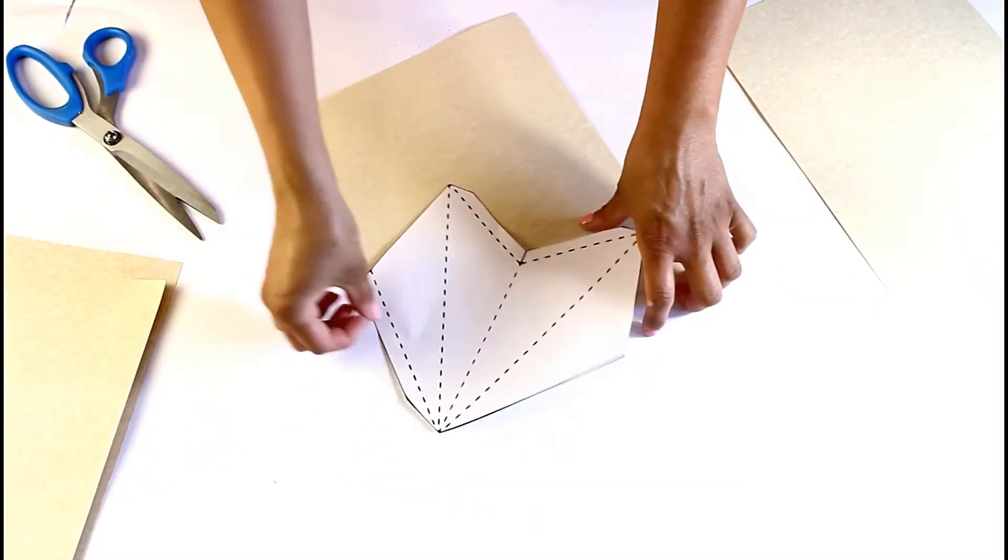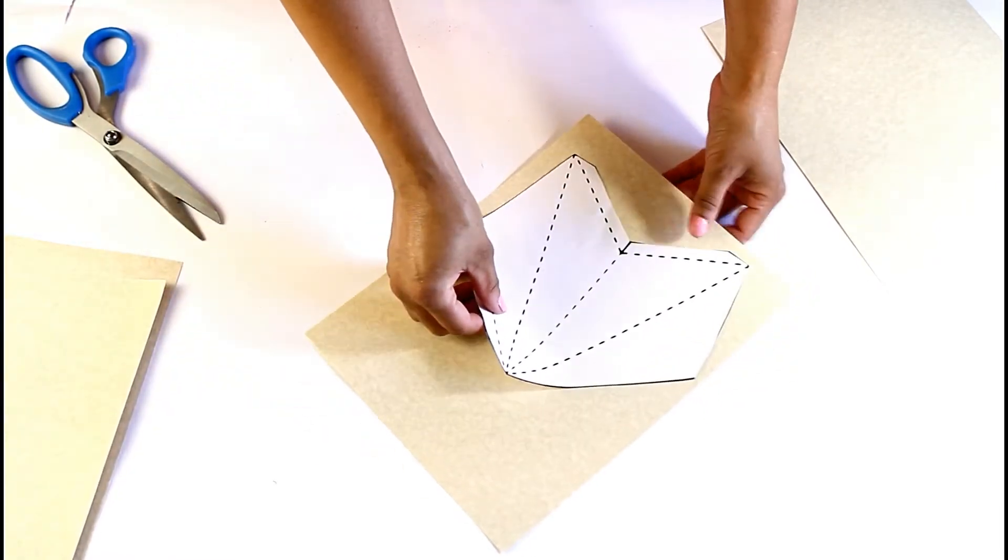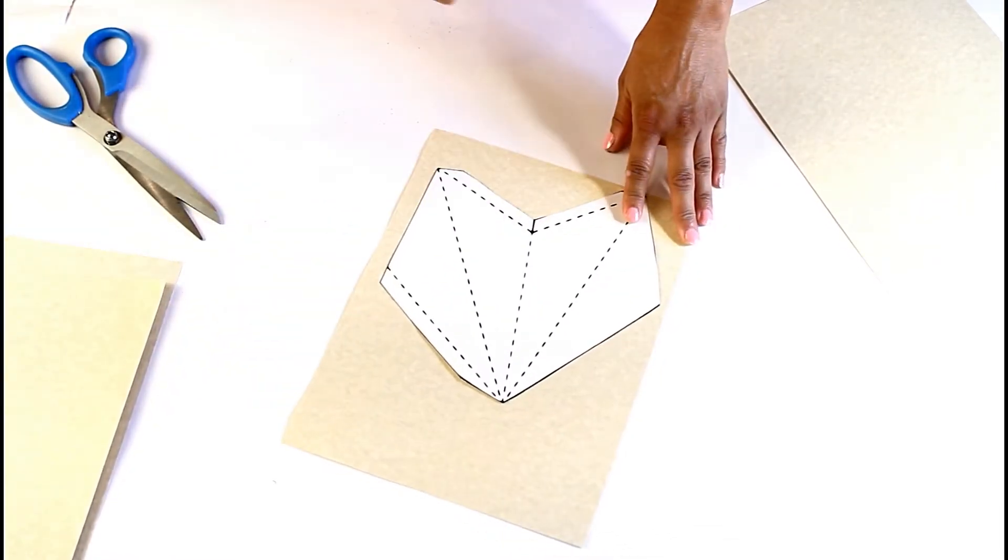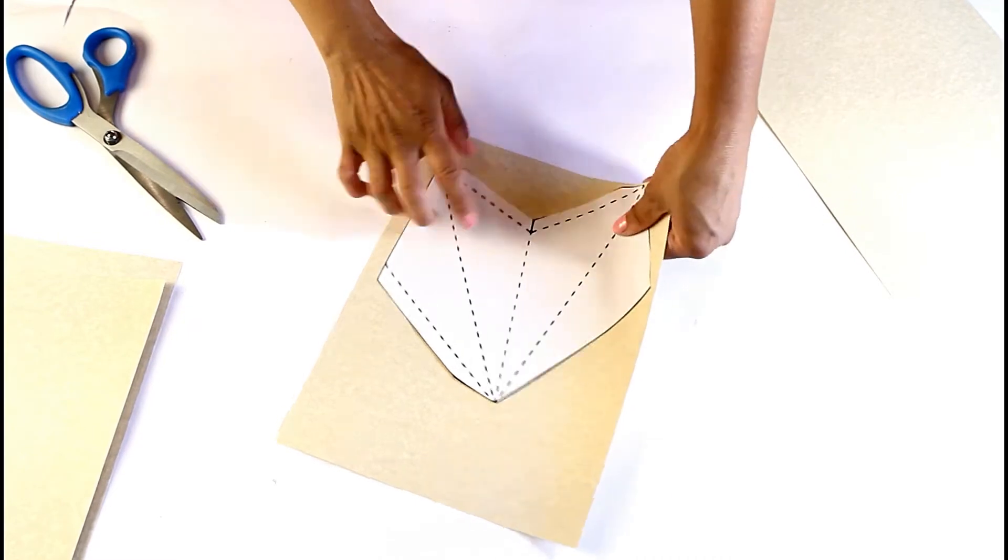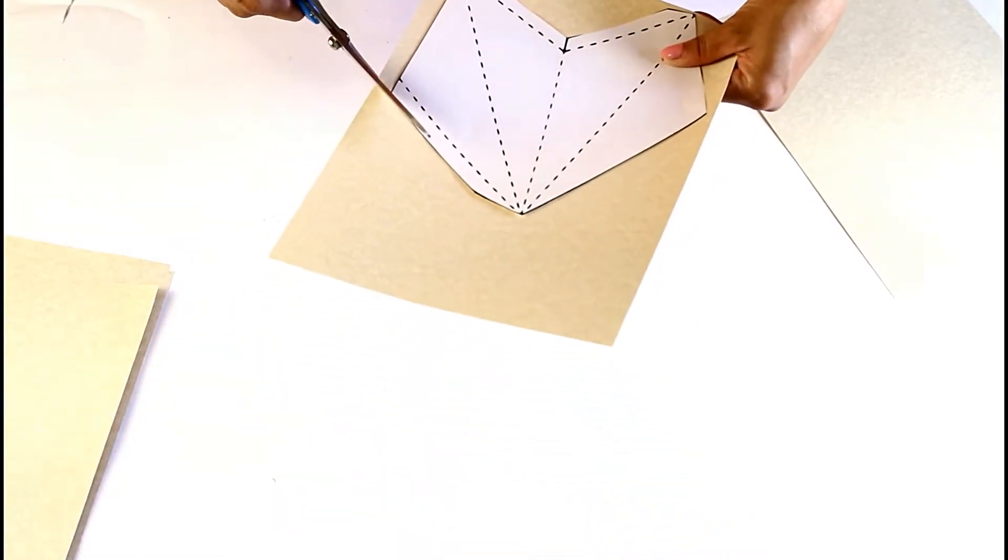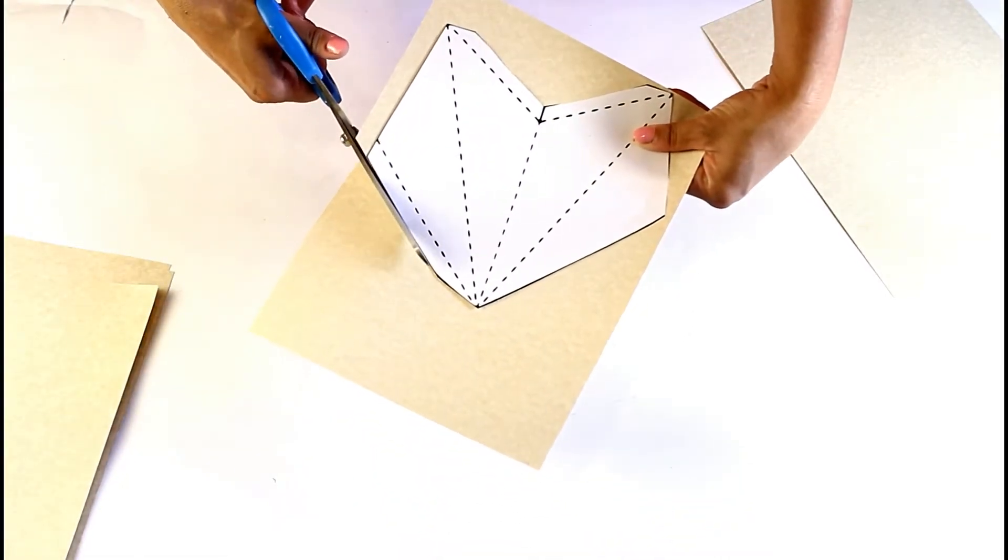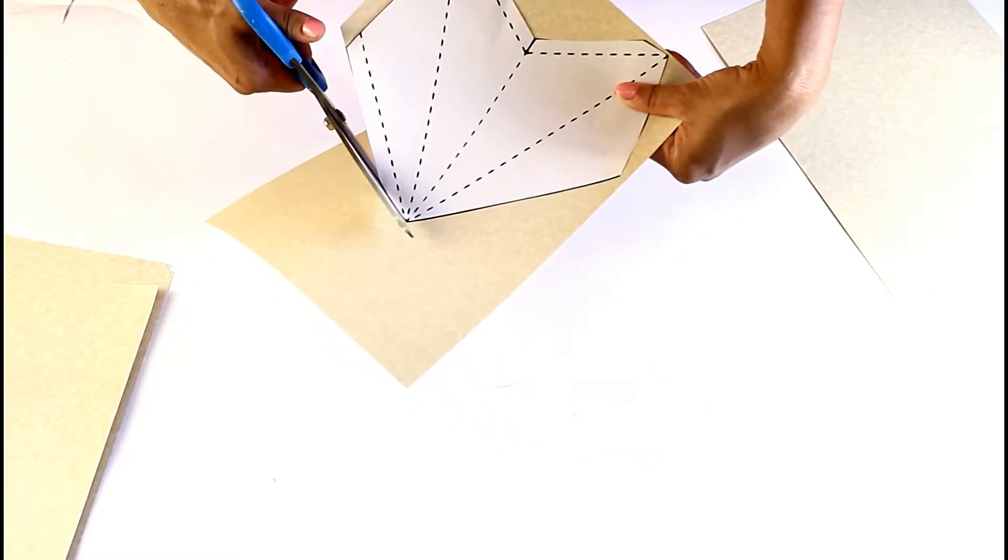Now that you have your template, if you want you can go ahead and laminate this if you plan to make these more often. I'm going to put this on here and just use this to cut it out. You could trace it and cut it out, but I find this is just quicker.